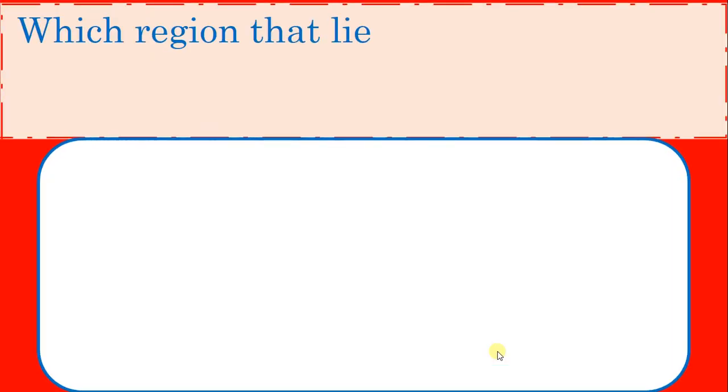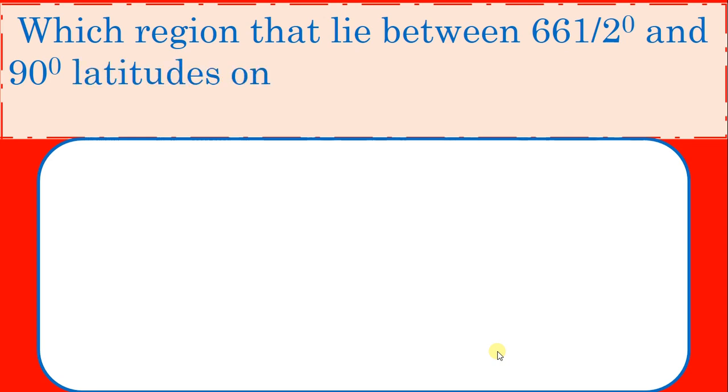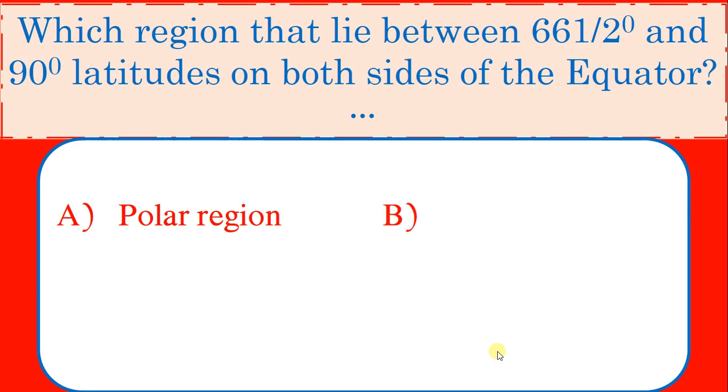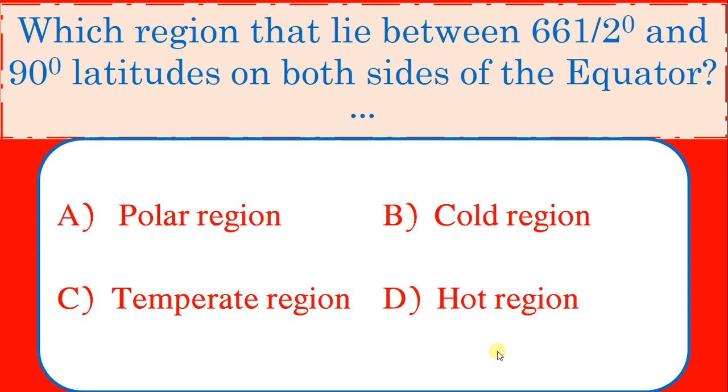Which region lies between 66.5 degrees and 90 degrees latitude on both sides of the equator? Options: Polar region, cold region, temperate region, hot region. Correct answer: Polar region.